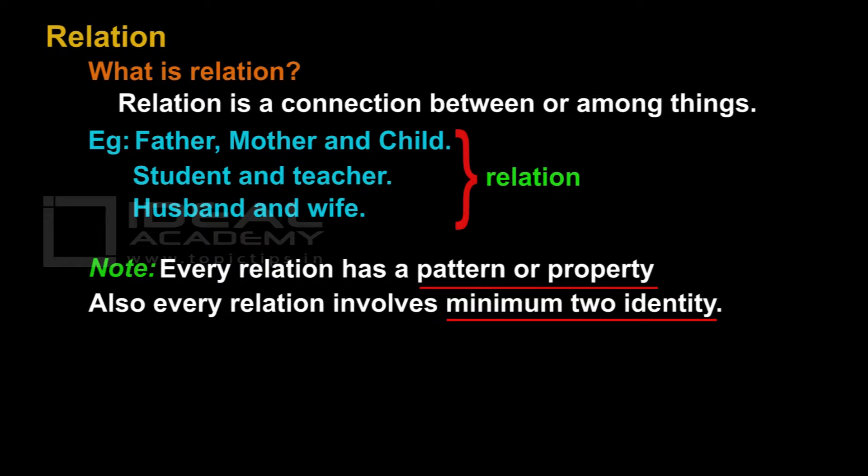When I say only 'husband,' I can't say any relation, as it doesn't make any sense. For this to be correct, I should say husband's relationship with wife or the kid. When there are two objects, we say 'between,' and when there are more than two objects, we say 'among.'